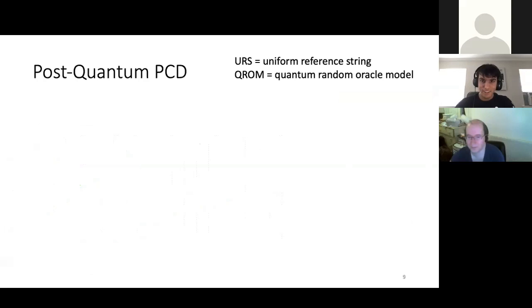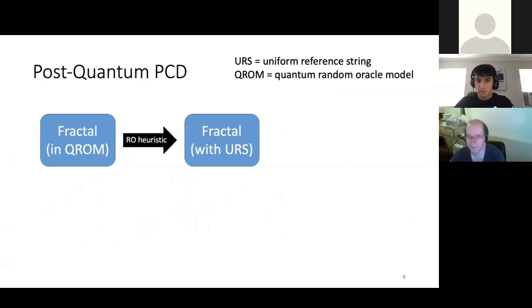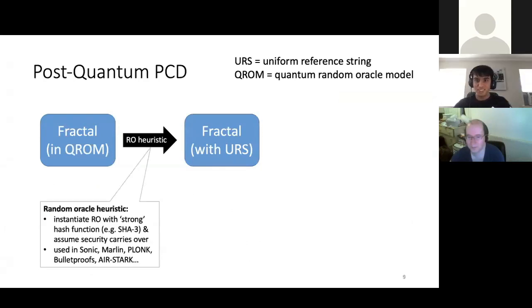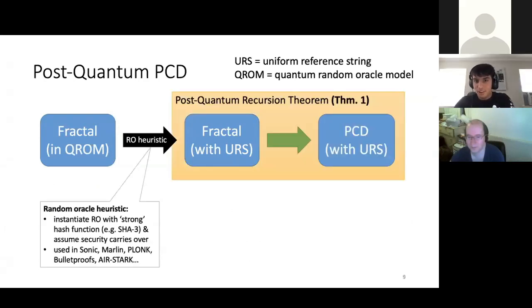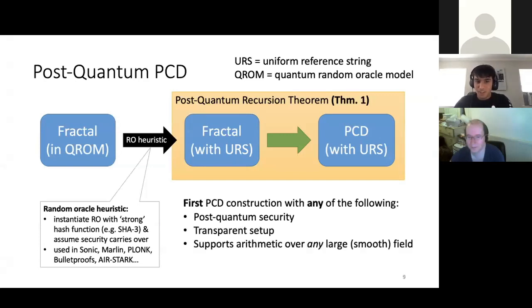So now let's go on to recursing fractal. What we do is you start with fractal proven secure in the quantum random Oracle model. You apply the random Oracle heuristic to get it as a snark. And the random Oracle heuristic is instantiating a random Oracle with a strong hash, like Blake or Shaw. And some security carries over. And this is used in an increasing number of snarks, like Sonic, Marlin, Plonk, Bulletproofs, Starks, etc. And then you recurse it to get PCD. So this gives you the first PCD construction that is post-quantum, has a transparent setup, and supports arithmetic over any large field. So now we can use binary fields or fields that don't support secure elliptic curves, and more.